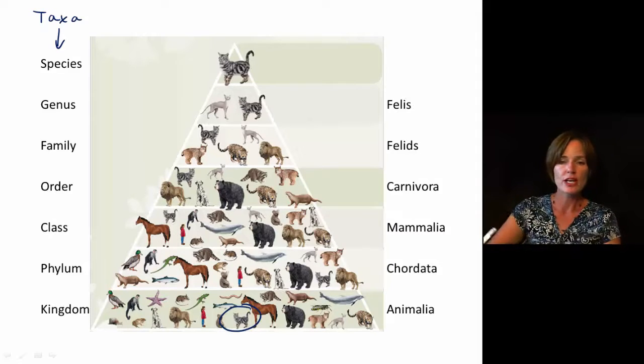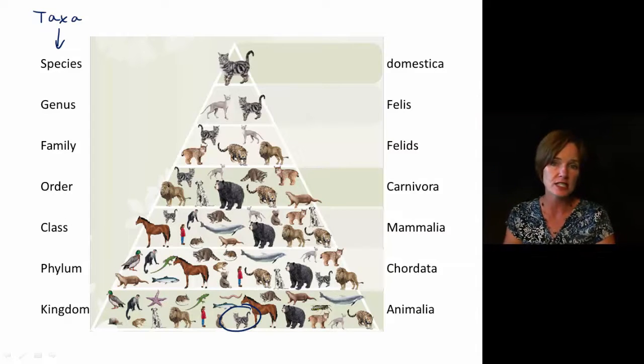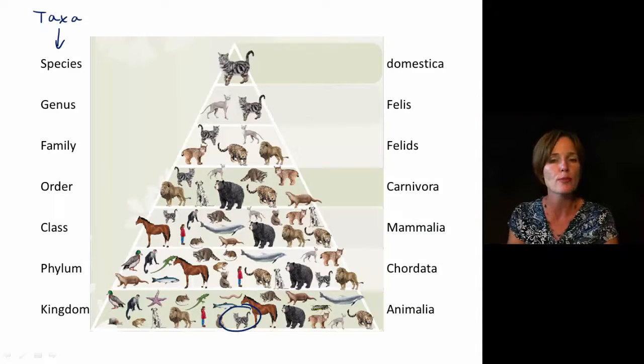Within the cat family, we have the genus Felis. And then finally, at the very top, we have the species name for the cat, which is Domestica.